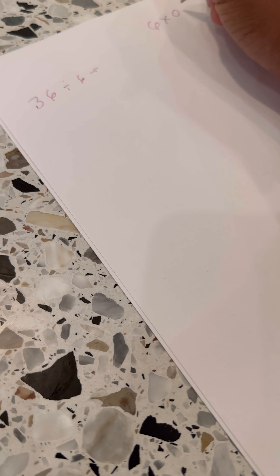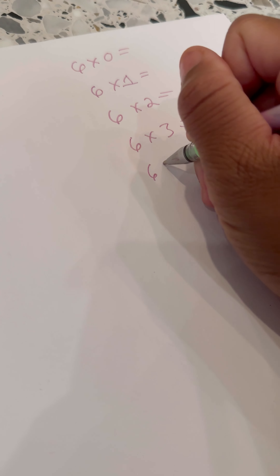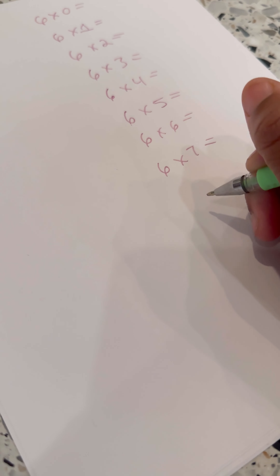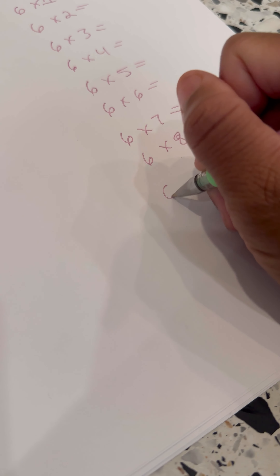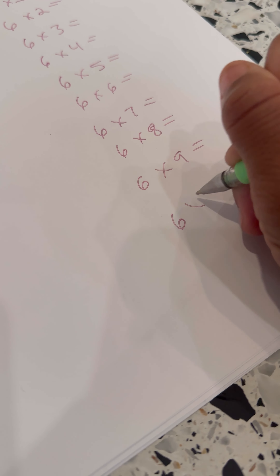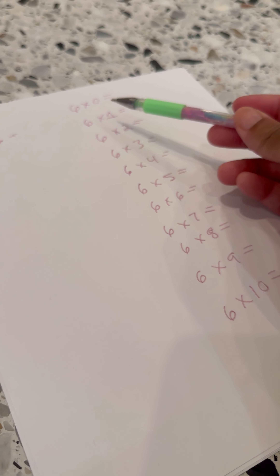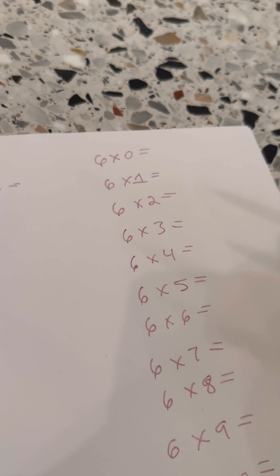So 6 times 0 equals, 6 times 1 equals, 6 times 2 equals, 6 times 3 equals, 6 times 4 equals, 6 times 5 equals, 6 times 6 equals, 6 times 7 equals, 6 times 8 equals, 6 times 9 equals, and then 6 times 10 equals. He's in 4th grade, so from 0 to 10 is sufficient enough for the grade level he's in. And then I just had him solve them.